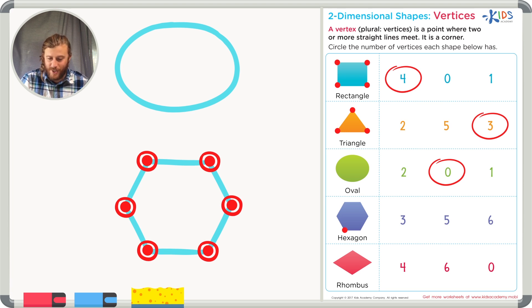Let's count on the worksheet just to be sure. I count one, two, three, four, five, and six corners or vertices. A hexagon has six sides and six vertices.